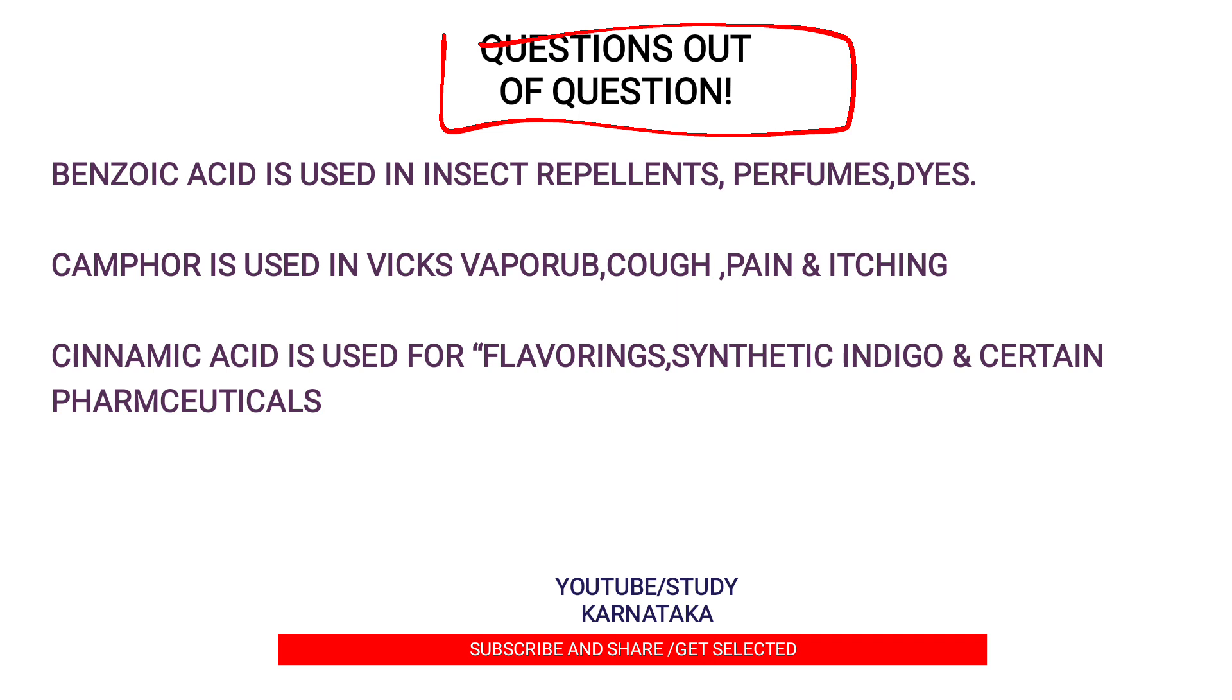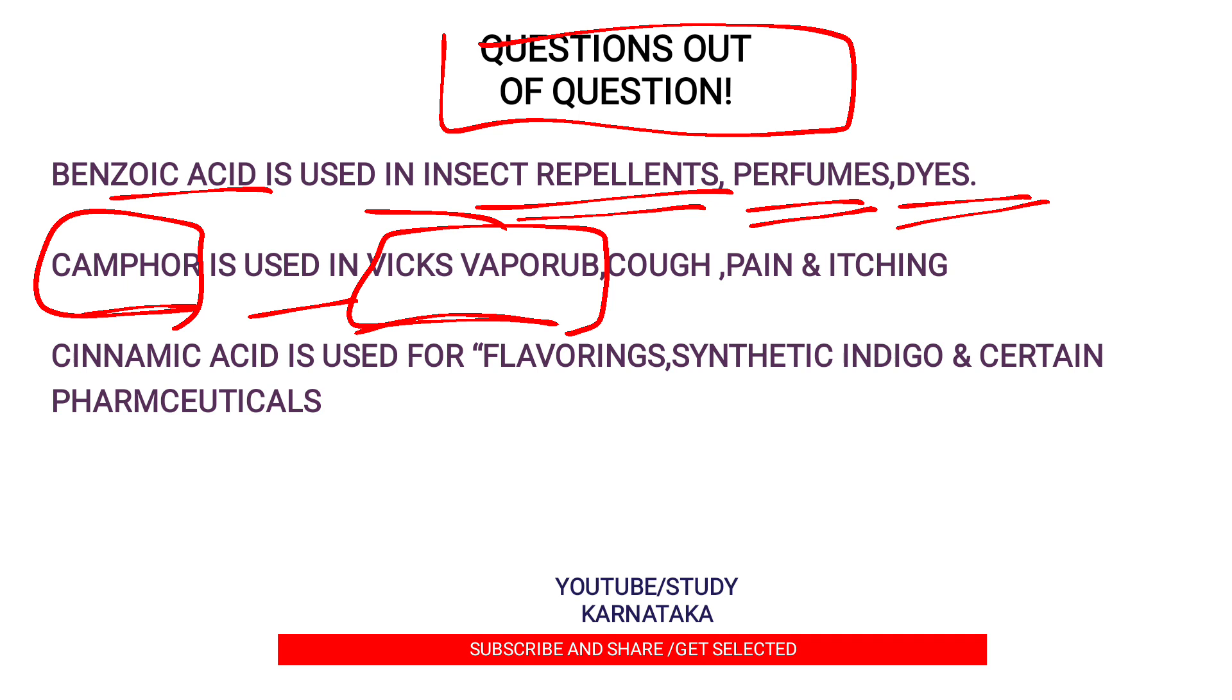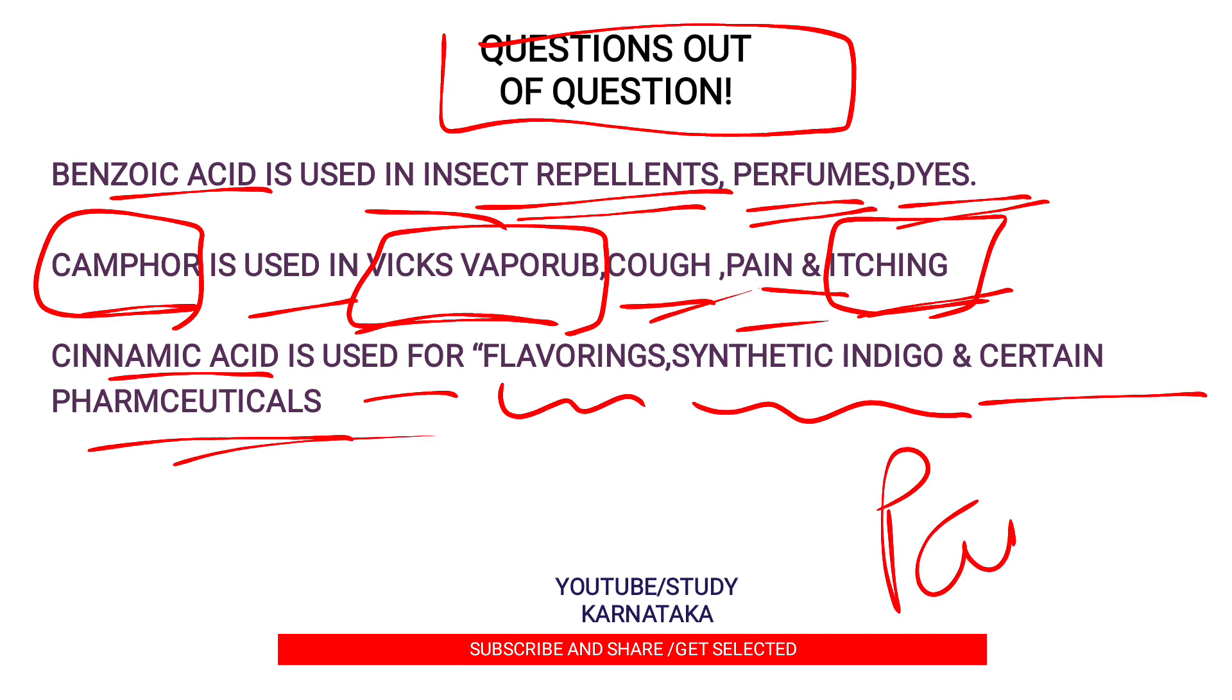Here are some of the hints that we can use for answering if some questions appear in the examination based on these options. First one is benzoic acid is used in insect repellents, perfumes, and dyes. Camphor is used in vapor rubs that we apply during cold or cough, such as Zandu balm. It is used in cough, pain, and even in etching also. Cinnamic acid is used for flavoring synthetics, indigos, and certain pharmaceuticals, and also in paint. In order to give the color to the paint, this is used.